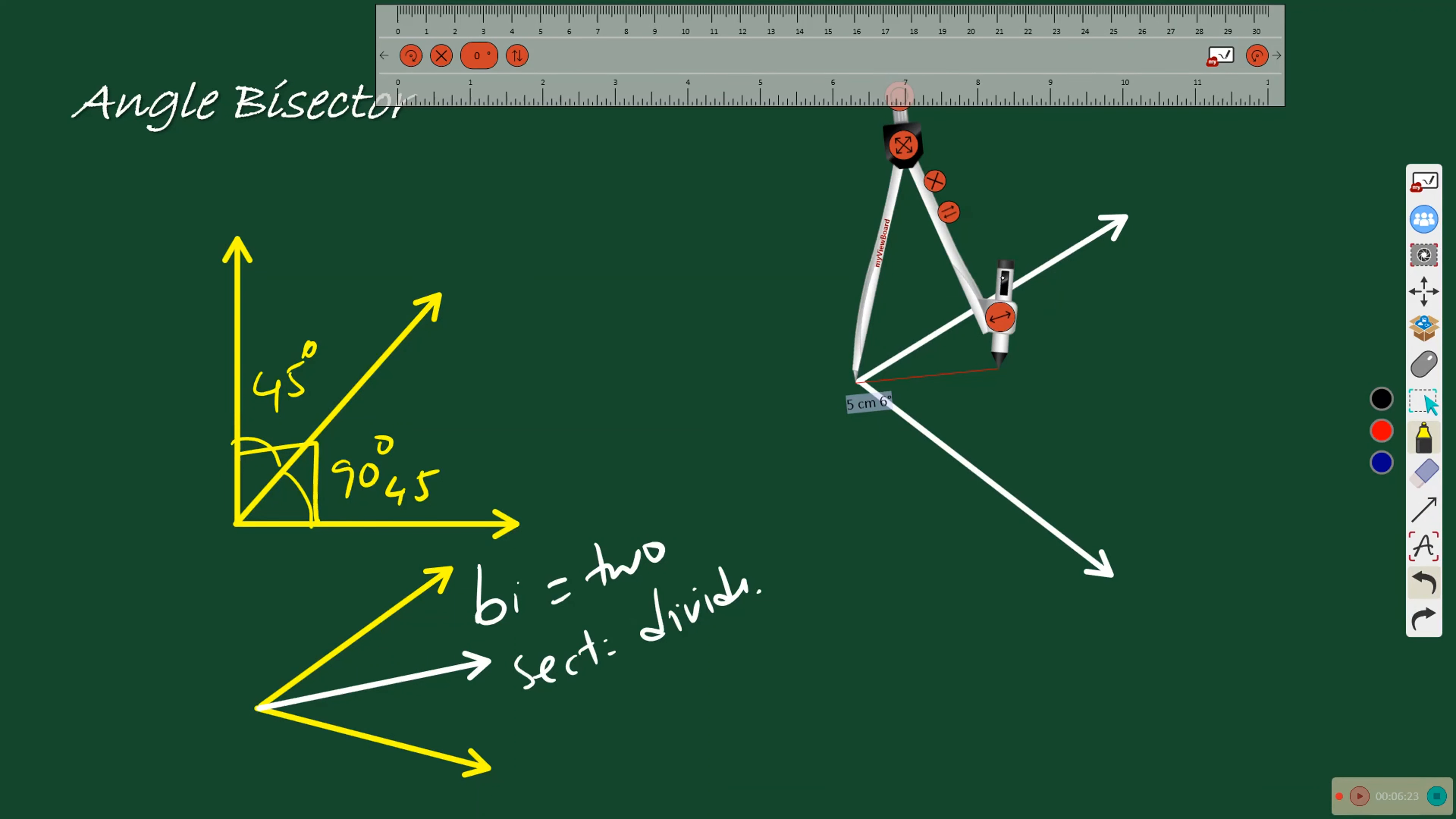Here it is. Draw an arc here. And take the compass to the other arm of the angle. Draw an arc here. Then take the compass. Keep the compass here at the intersection. Increase. Make it weak. Take the compass to the other intersection. Turn it. Draw it. You got a point of intersection.